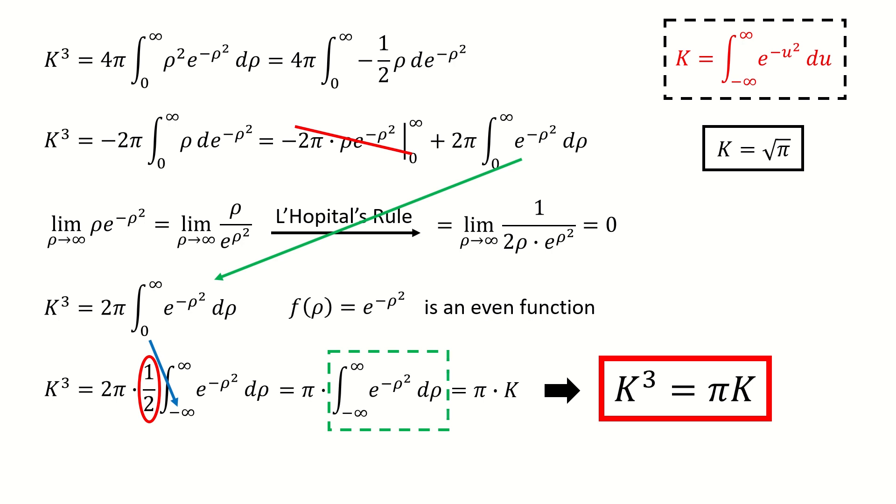If you compare this method with the polar coordinate method, you will find the difference. For the polar coordinate method, it's a direct way to calculate the integral K. But here, the spherical coordinate method is an indirect way to calculate K. That's why, in the very beginning of this video, I said we will calculate this integral by without calculating this integral.